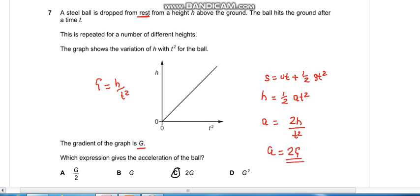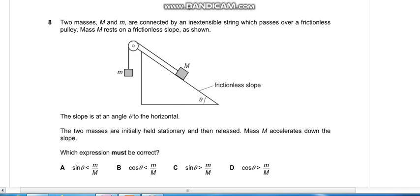Question number eight: Two masses, capital M and small m, are connected by an inextensible string which passes over a frictionless pulley. Mass M rests on a frictionless slope as shown. The slope is at angle theta to the horizontal. The two masses are initially stationary and then released. Mass M accelerates down the slope, meaning M is greater than small m. This force would be greater and this tension, due to the string, would be smaller. From here we can say that the forward force Fd is greater than tension.